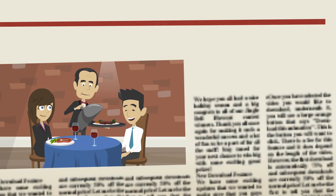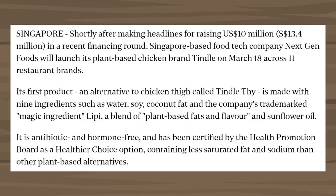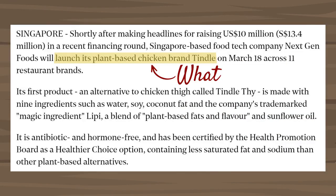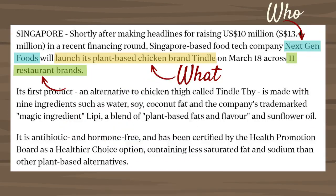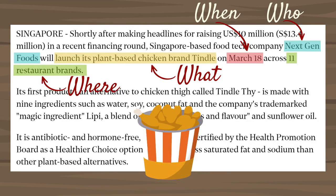Let's also look at an excerpt from a news article and try to identify its components. This is definitely the 'what' — the most important information. The article also tells us who is launching it, where, and when it will be launched. The rest are details and breakdowns to give the reader more about this plant-based chicken and what makes it more special than others.